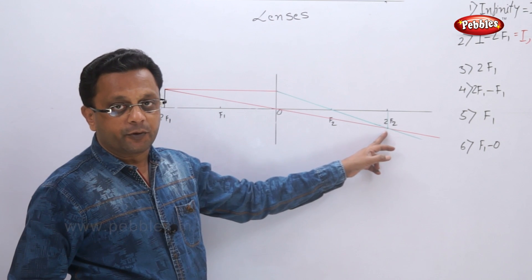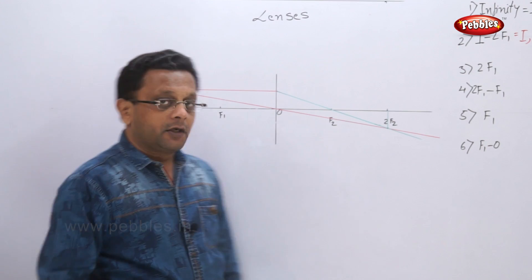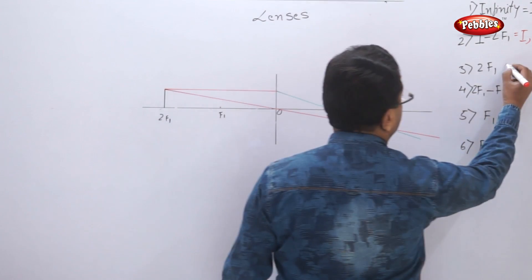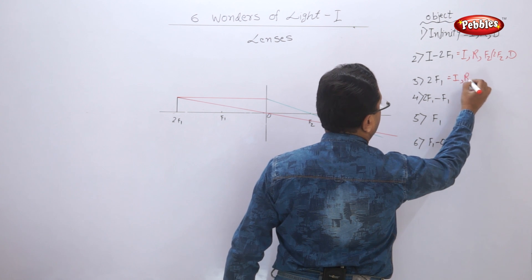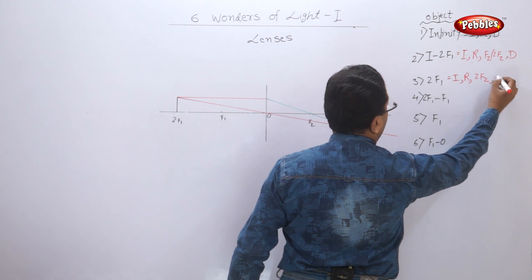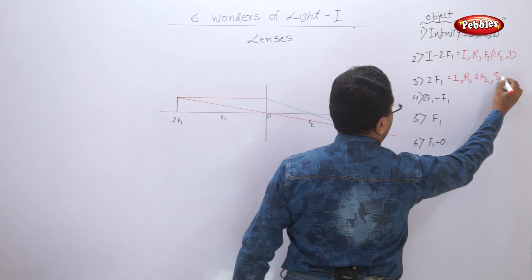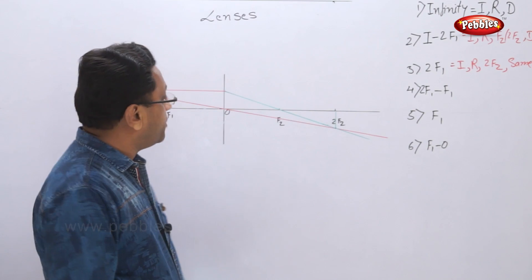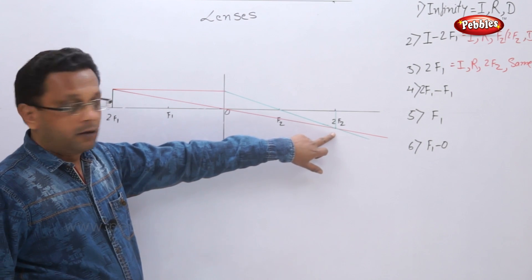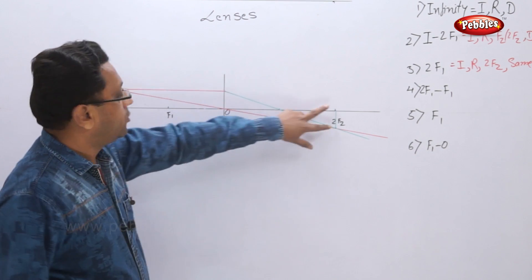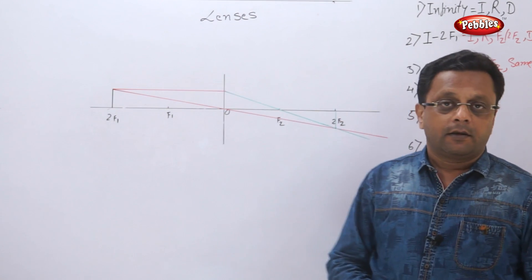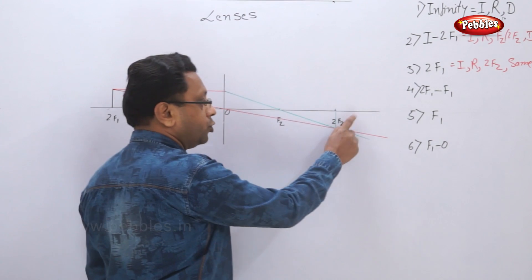The point of intersection falls exactly on 2F2. So the image is inverted, real, of the same size as the object, and located at 2F2. Object and image are of the same size.